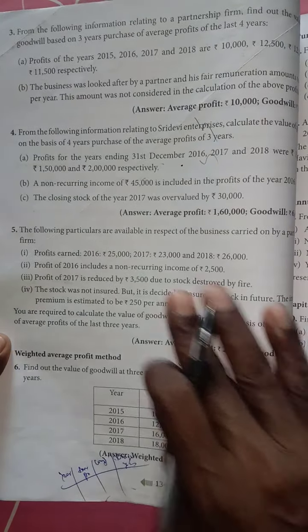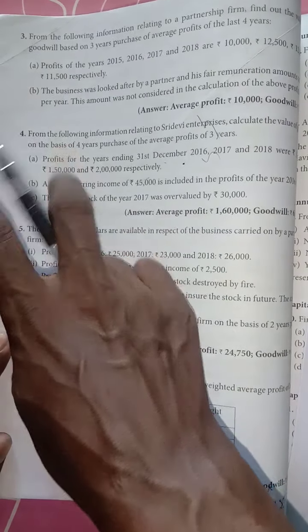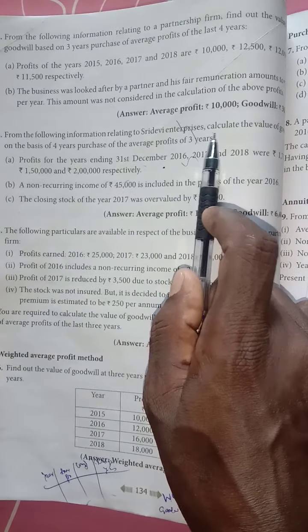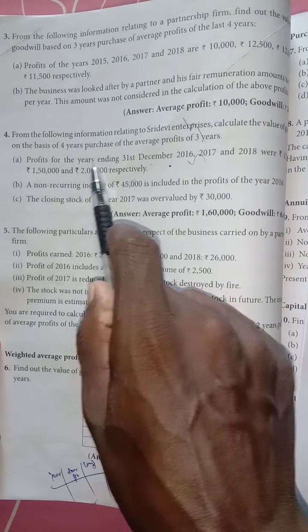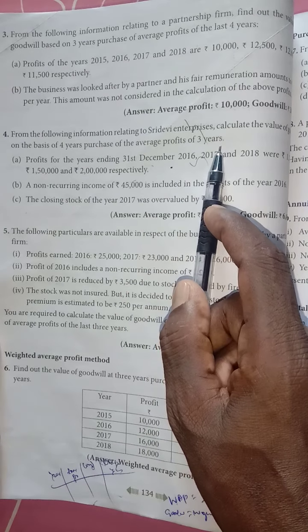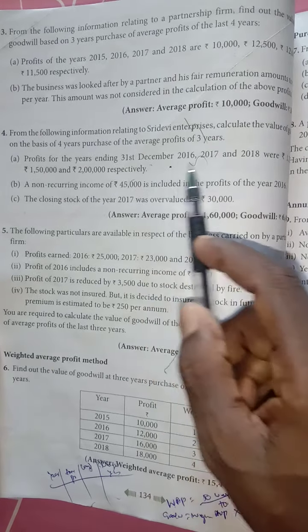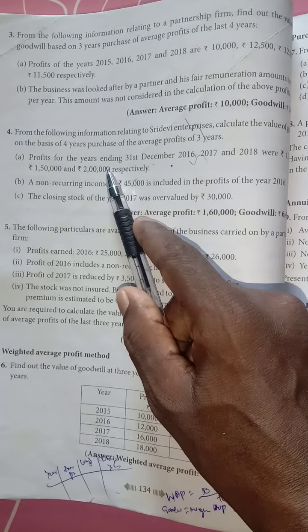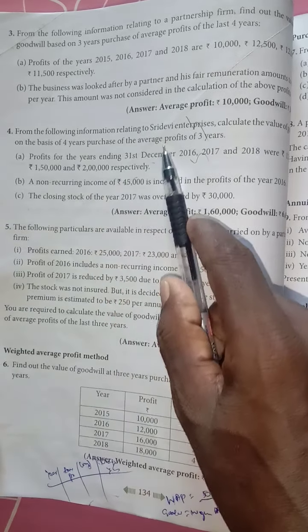Welcome students, page number 134, axis 4. From the following information relating to Sridhavi Enterprise, calculate the value of goodwill on the basis of four year purchase of the average profit of three years.